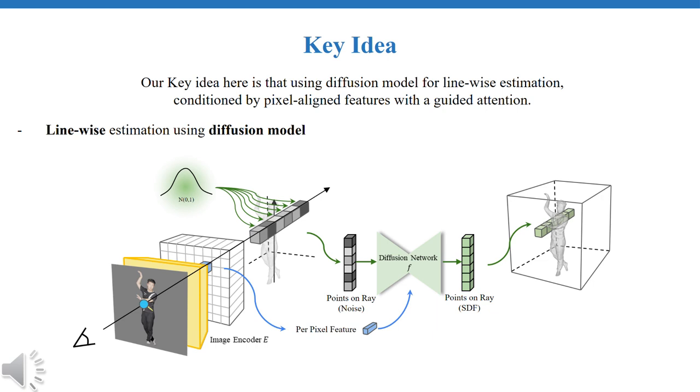However, applying the diffusion model to directly learn 3D geometry is challenging due to the need for large datasets and high computational resources. To mitigate these issues, PIDFU focuses on 1D geometry distribution along camera rays, leveraging 2D spatial correlation during trained image encoder, thereby improving reconstruction of images outside the training domain.